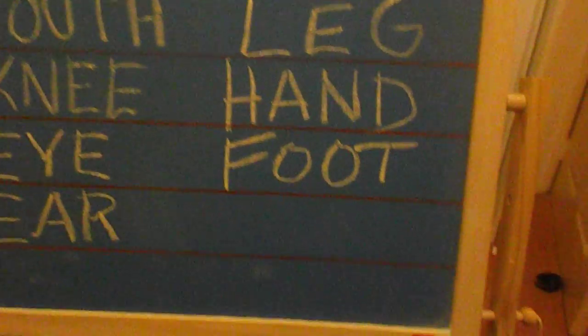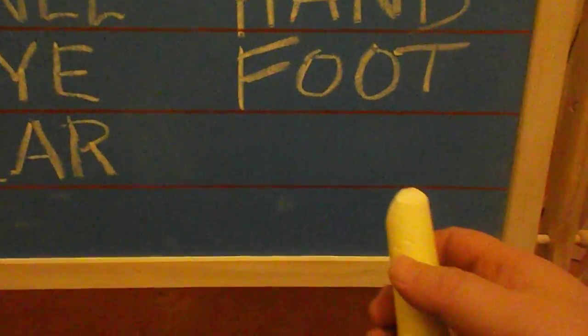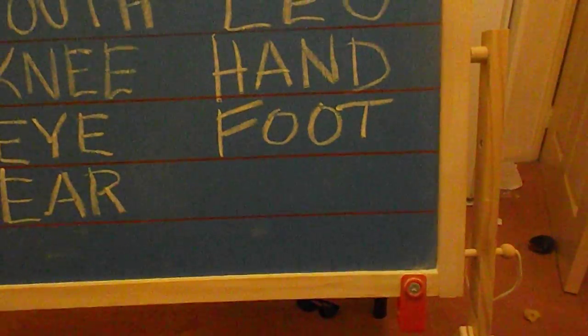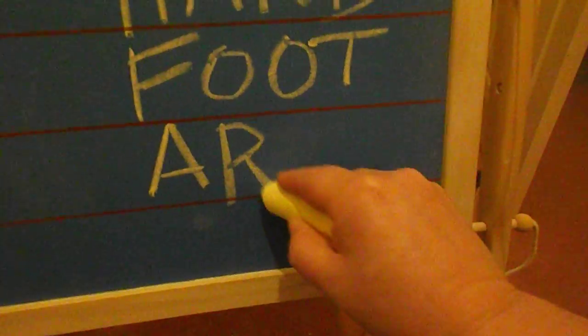And next, to round out the list of ten body parts, here is — what was the one that we usually do? Oh, yeah, of course. Where is it? Arm, yeah. Arm. That's right, your arm.